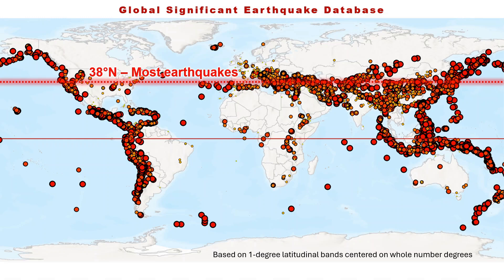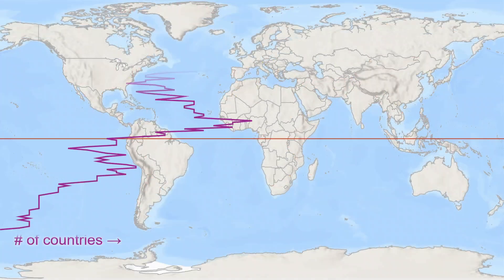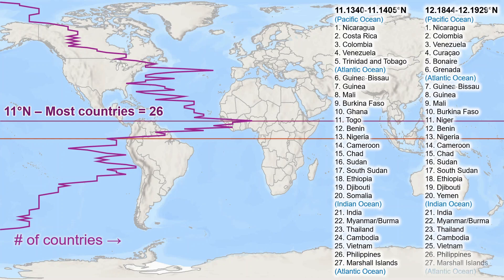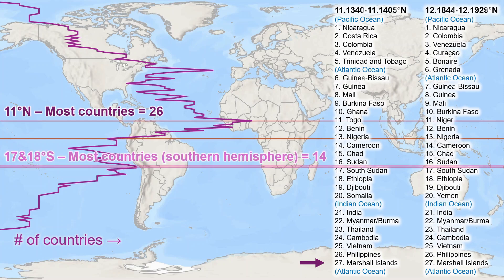Let's finally look at some human-pertaining latitude patterns. The whole number degree of latitude crossing the most countries is 11 degrees north, intersecting 26 countries. But if you add in some decimal places, there are two narrow latitude bands across 27 countries slightly further north. The most countries crossed by parallels in the southern hemisphere is 14 countries, by both 17 and 18 degrees south.